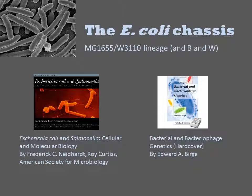There are various E. coli strains that are not in this lineage and still in common use. For example, BL21 is used extensively in industry and in the wet lab for protein overexpression. It is an E. coli B serotype strain, is of a distinct lineage from K12 strains, and has significant genetic and biochemical differences.